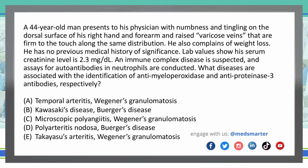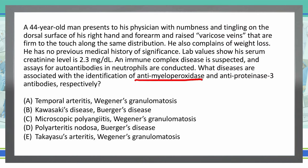This question is pretty straightforward. We could probably answer it without any of the vignette — it's essentially asking what anti-myeloperoxidase and anti-proteinase 3 antibodies are associated with. If you know the answer to this, you can easily rule out some of the answer choices.